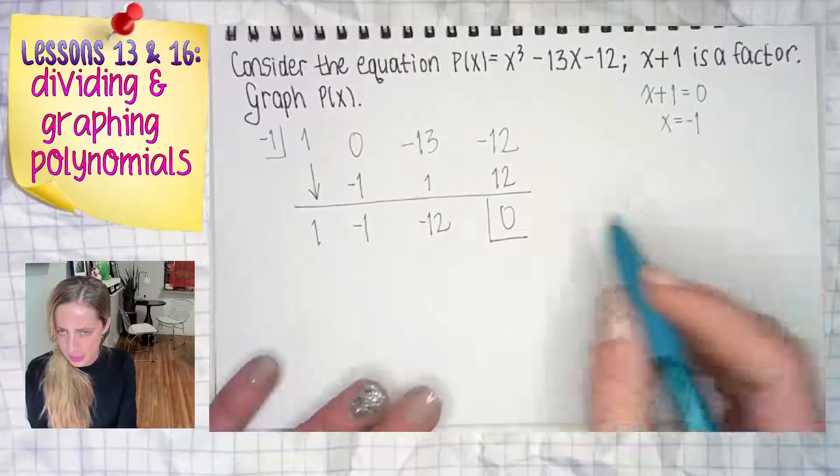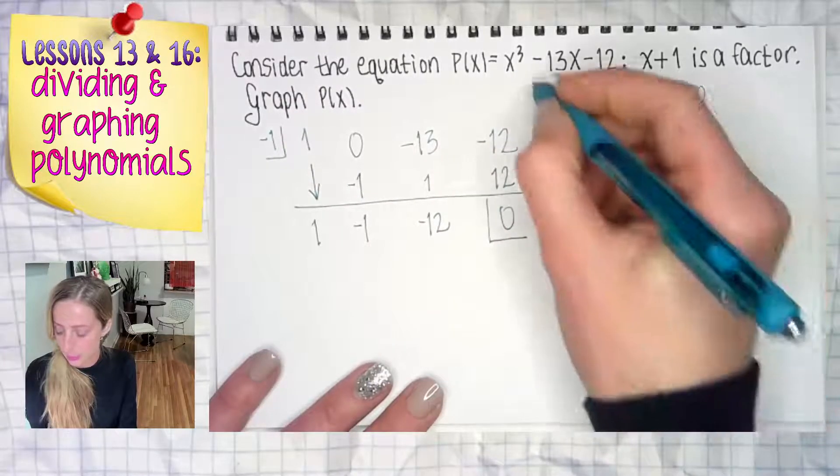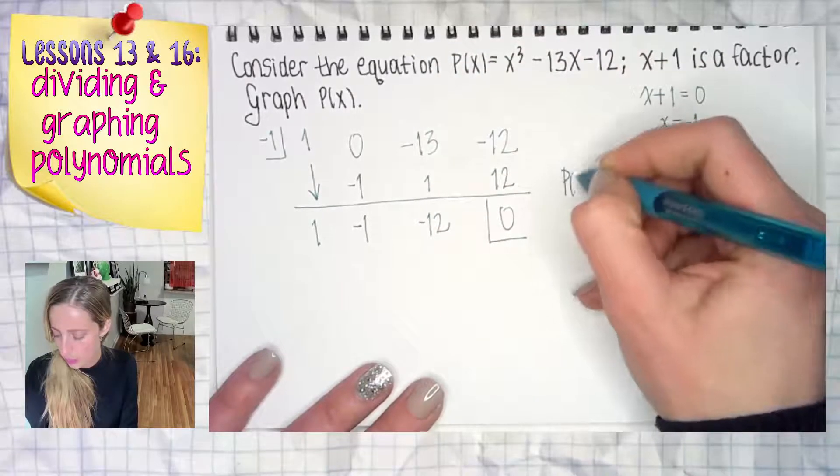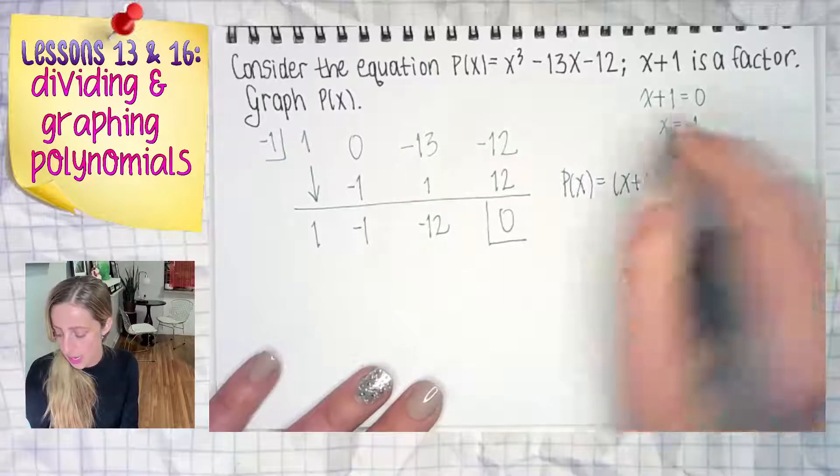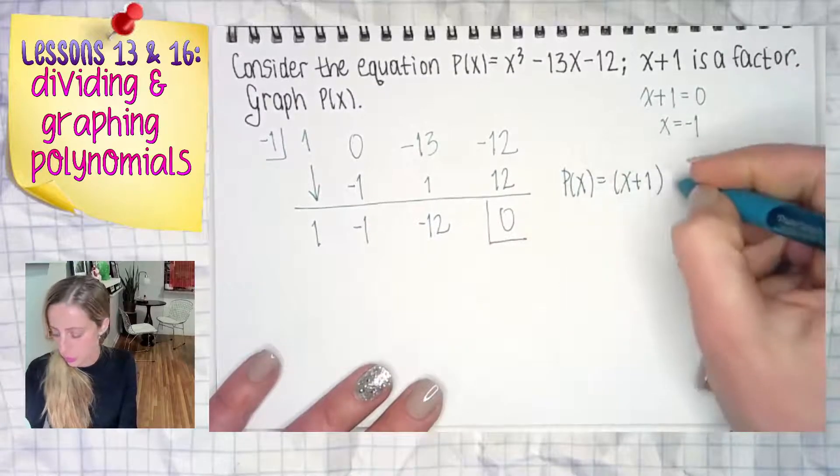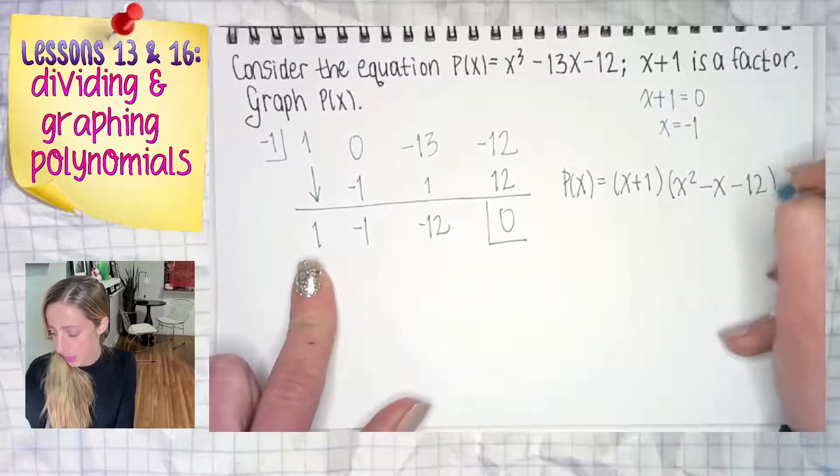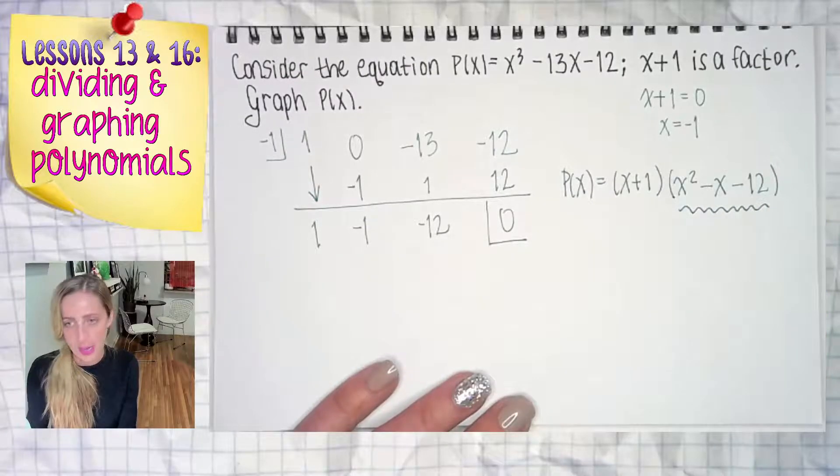So how do we write our answer? Well, this right here just got divided by x plus one. So that P of x is also equal to the product of x plus one and our quotient, which was x squared minus x minus 12.